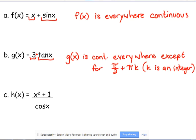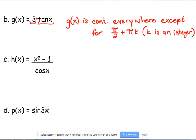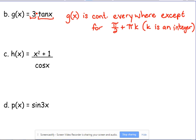Let's look at c. C is a quotient problem. h(x) is equal to x squared plus 1 over cosine of x. x squared plus 1 is continuous everywhere, not an issue. Divided by the cosine of x.